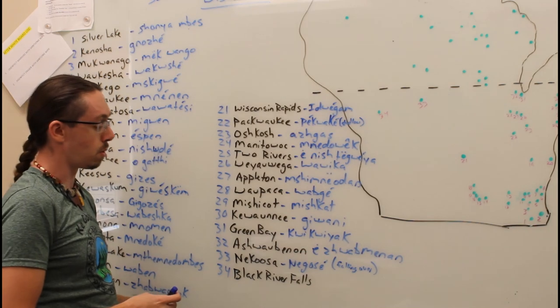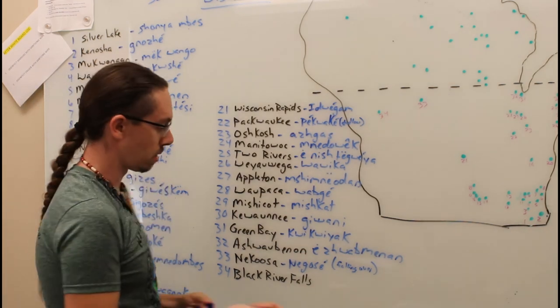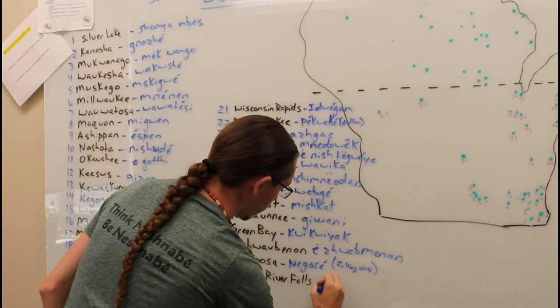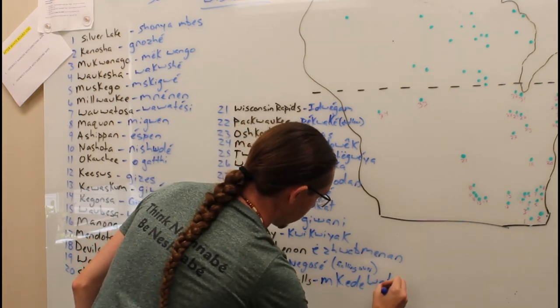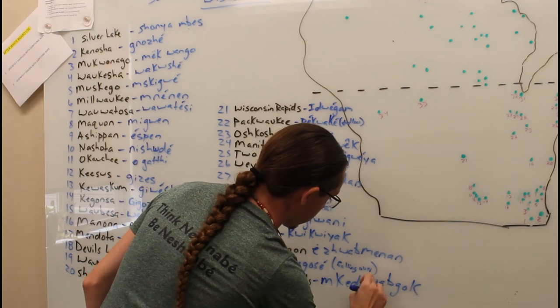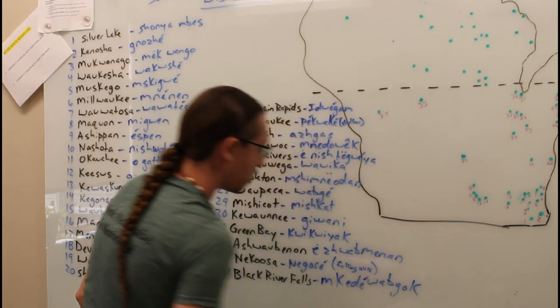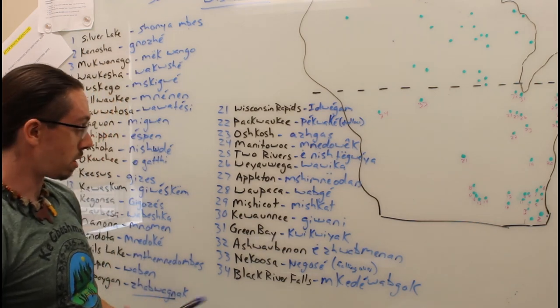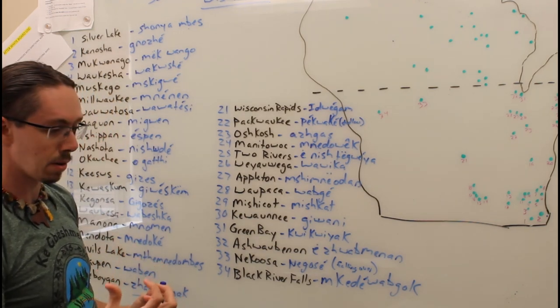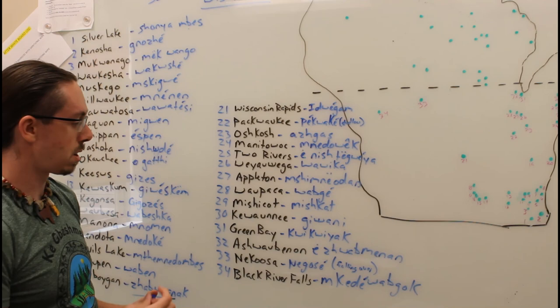Number 34, we have Black River Falls. That area we call Makate-bwana-sibiing, and that literally means like the black metal, place of the black metal.